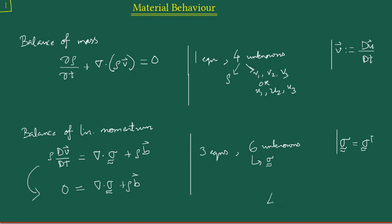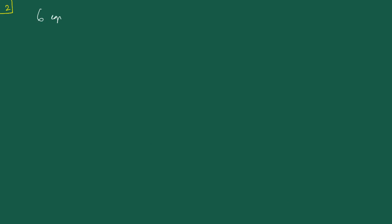So in total we have one plus three — four equations — and four plus six — ten unknowns. That is the balance sheet: four equations and ten unknowns, so we have a discrepancy or shortage of six equations. Where do we get these six equations? This is what motivates us to discuss material behavior, because that description is what is going to provide us with the six equations we need.